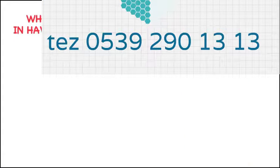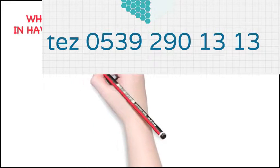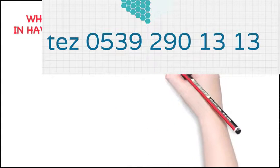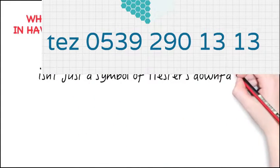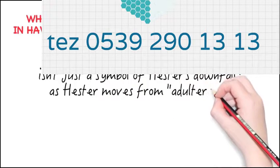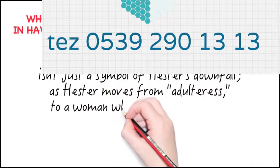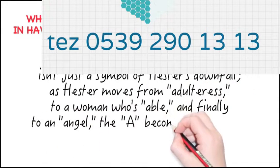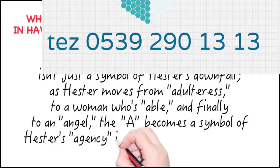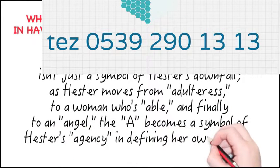Question: What role does the Scarlet Letter A play in Hawthorne's novel, and why is it important? Finalized thesis, version 2: In the Scarlet Letter, the letter A isn't just a symbol of Hester's downfall. As Hester moves from adulteress to a woman who's able, and finally to an angel, the A becomes a symbol of Hester's agency in defining her own identity.